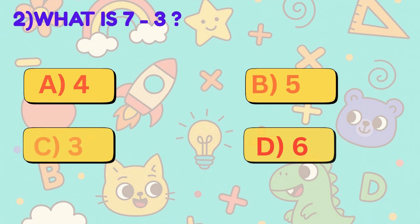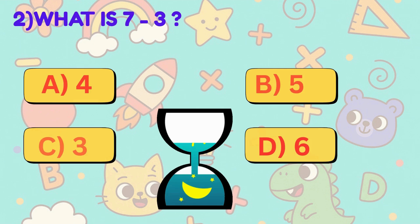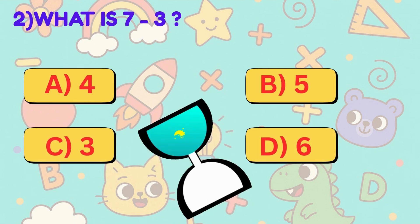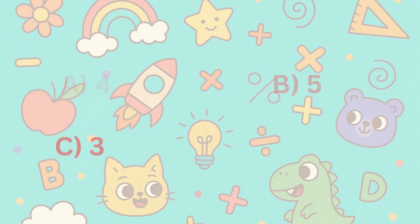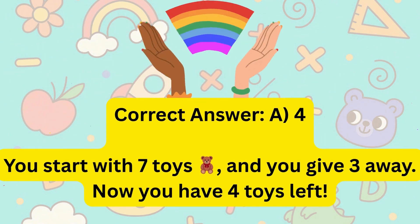2. What is 7 minus 3? Is it A, 4, B, 5, C, 3, or D, 6? Correct answer is A, 4.